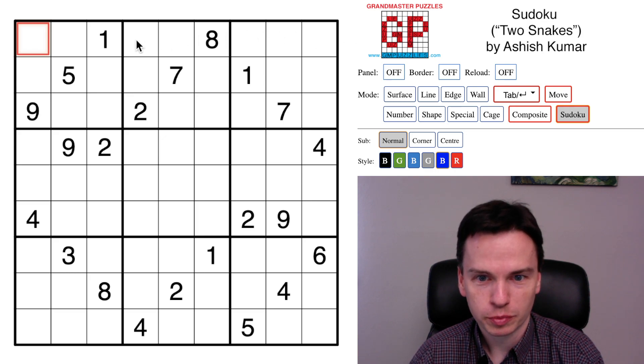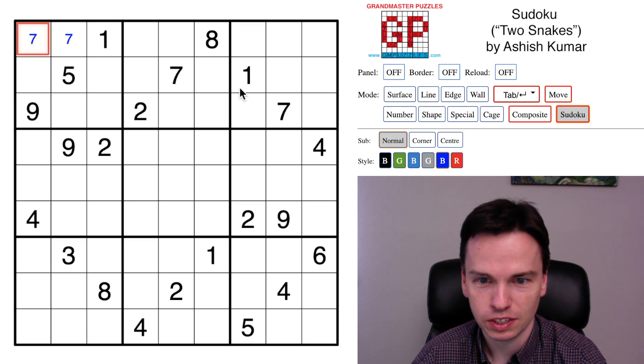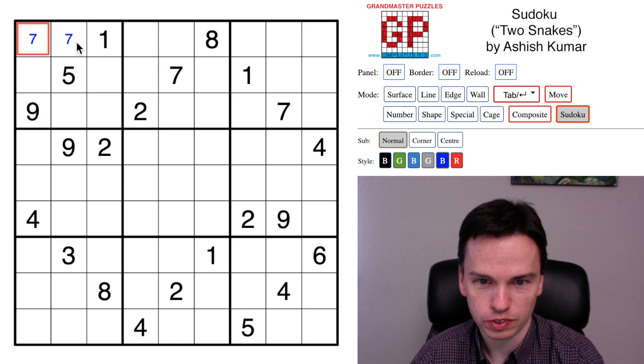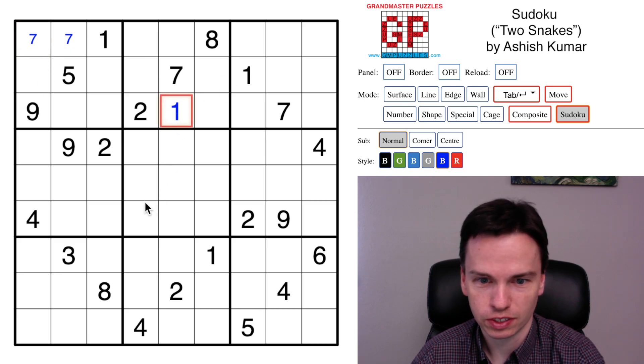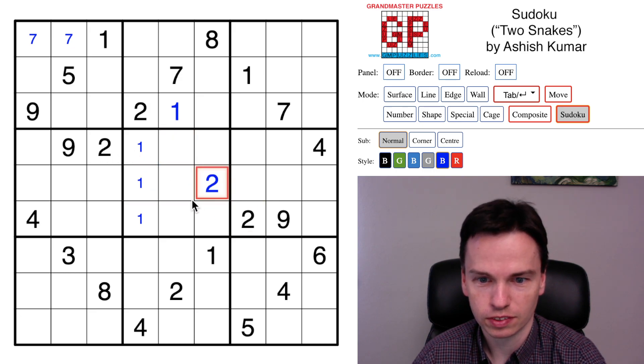We're here to solve this hard Sudoku puzzle by Ashish Kumar called Two Snakes. I'm going to start as I normally do by just marking some digits that I see twice in a set of rows or columns with notes around them. I've got two ones here, so I've got another one in some of these cells. I've got two twos in the middle rows, and this is the last spot for that two.